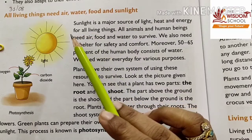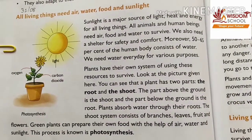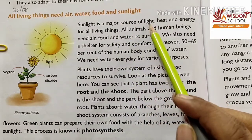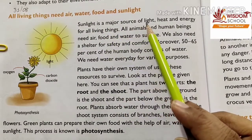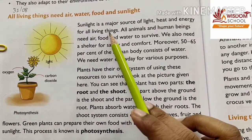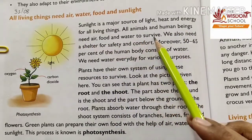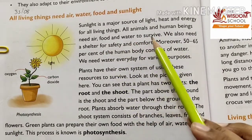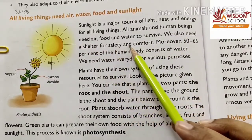Sunlight is a major source of light, heat and energy for all living things. All animals and human beings need air, food and water to survive. We also need shelter for safety and comfort.